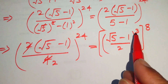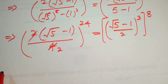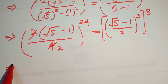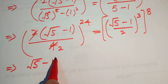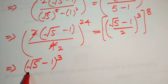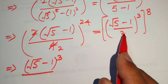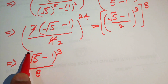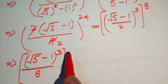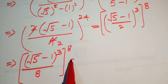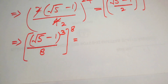We separate the cubed exponent on numerator and denominator, writing it as (square root of 5 minus 1) cubed over 2 cubed, where 2 cubed equals 8, and this whole thing is raised to the power of 8. After that we need to use the cubic formula.